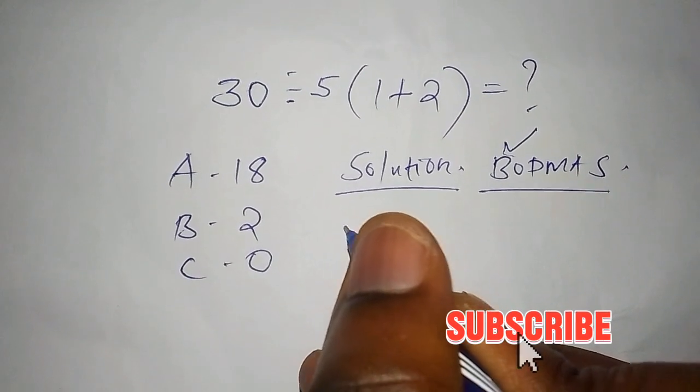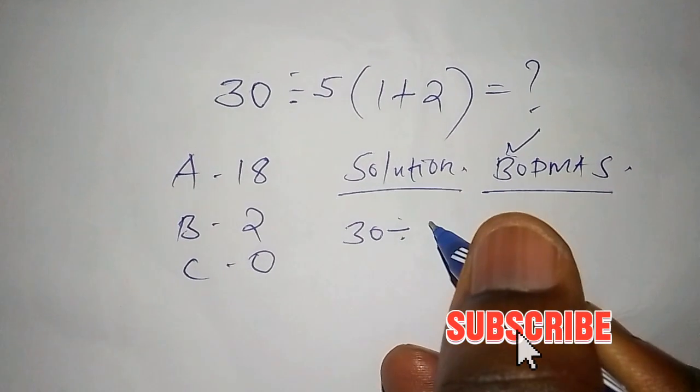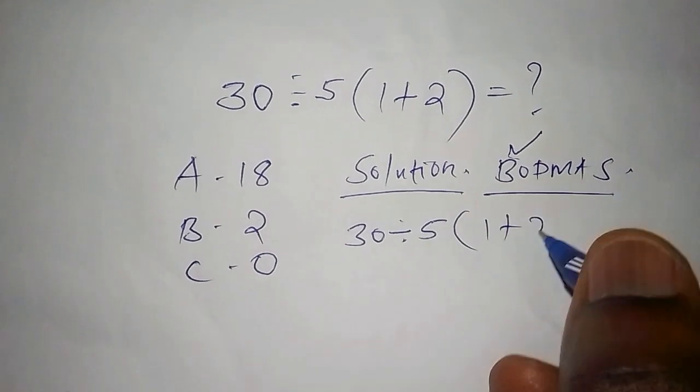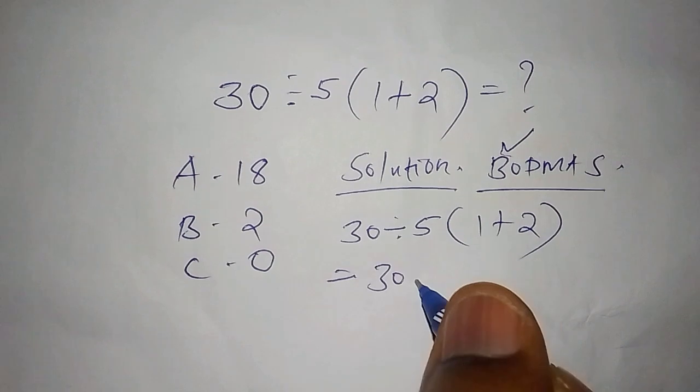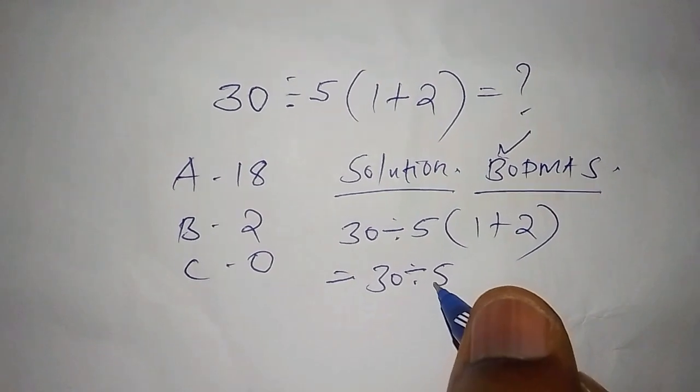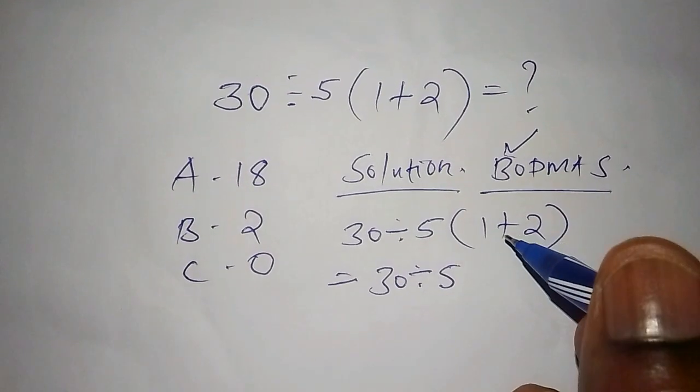So this one is 30 divided by 5 into bracket 1 add 2. So this one equals to 30 divided by 5. We are going to work out the number inside the bracket.